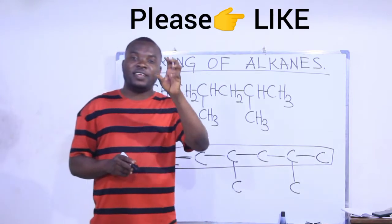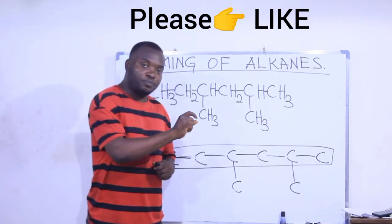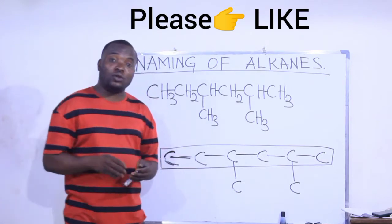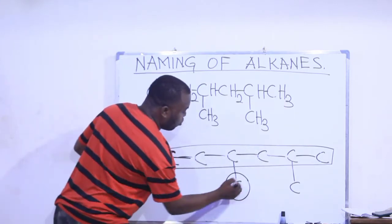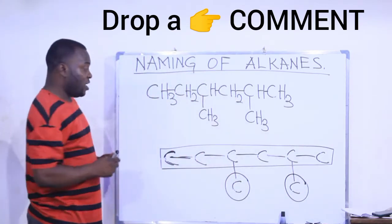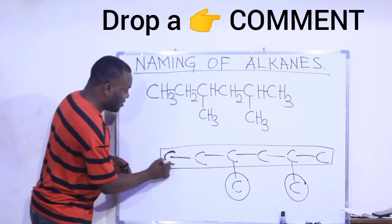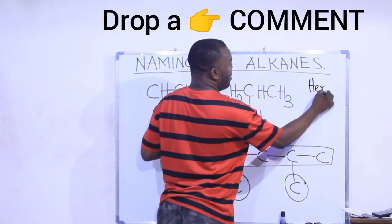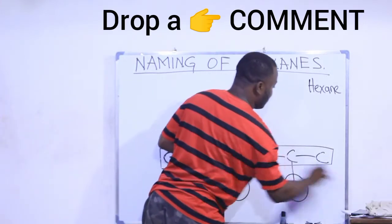Rule number two: identify the substituents or attachments present in the compound. After locating the longest chain, identify your attachments — those carbon branches which are not part of your longest chain. Here we have two attachments that are not part of the chain. Since the longest chain has six carbons, the parent name is hexane, because hexane stands for six carbons.